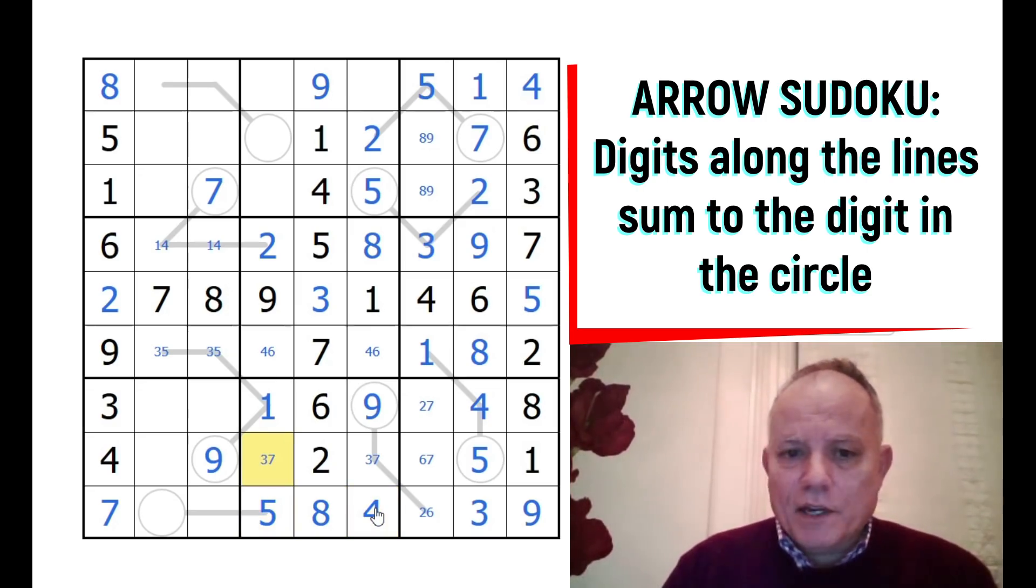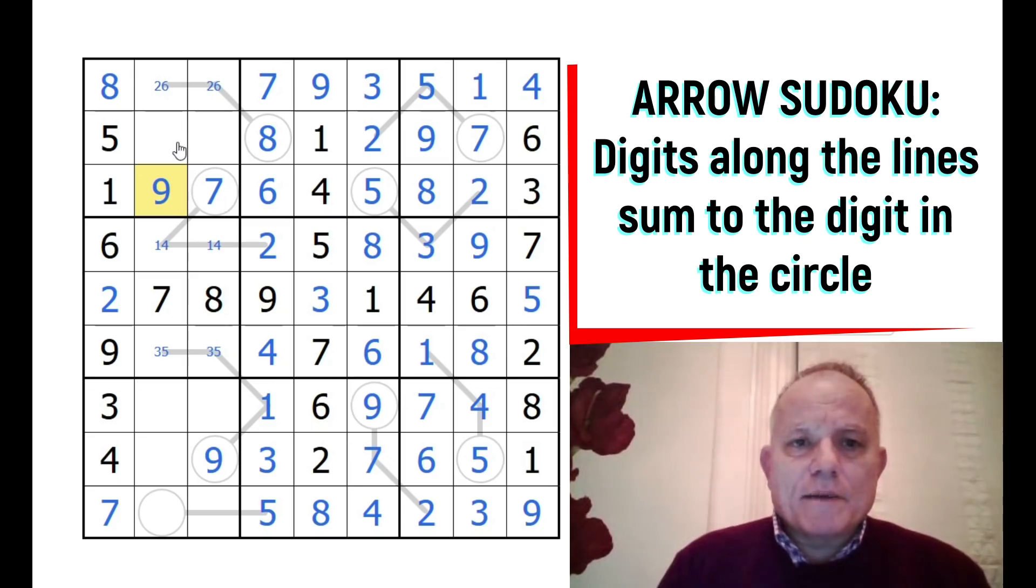We've now got a 3-7 pair there. The 2 on this line now makes that 7. We're getting rid quite fast of all our possibles. Four and 5, 3-8-9-7 here. These are 2 and 6 now - we don't know the order but we know what they add up to.